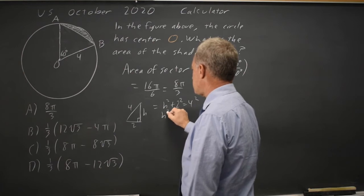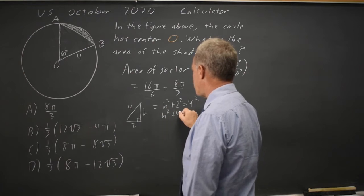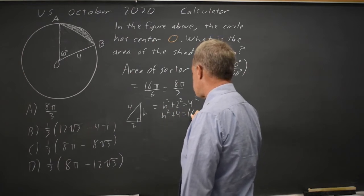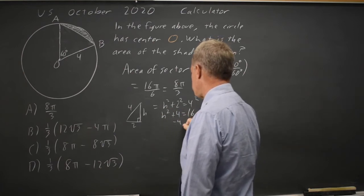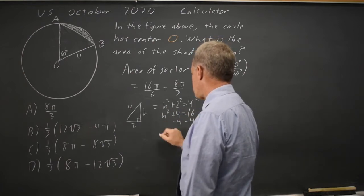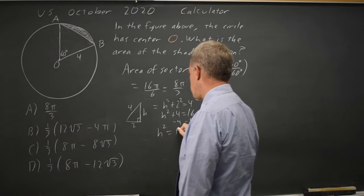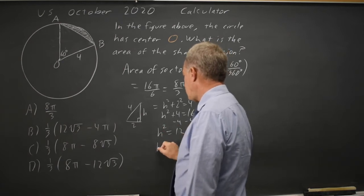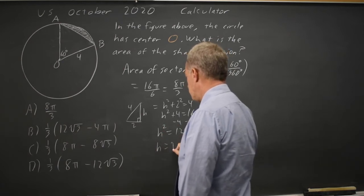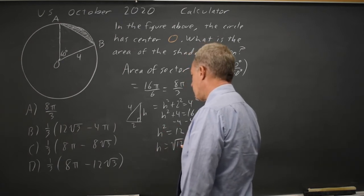So h² plus 4 equals 16. That gives h² equals 12, so h equals root 12.